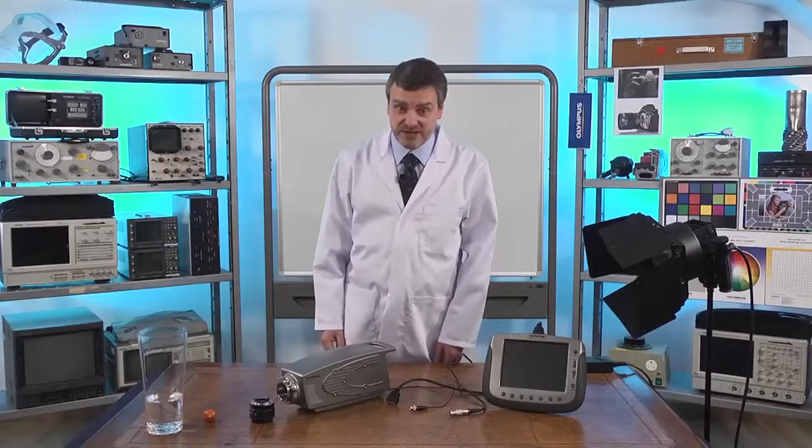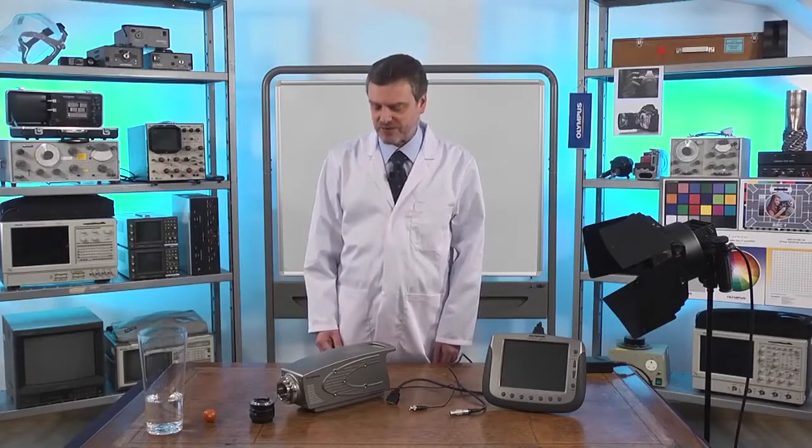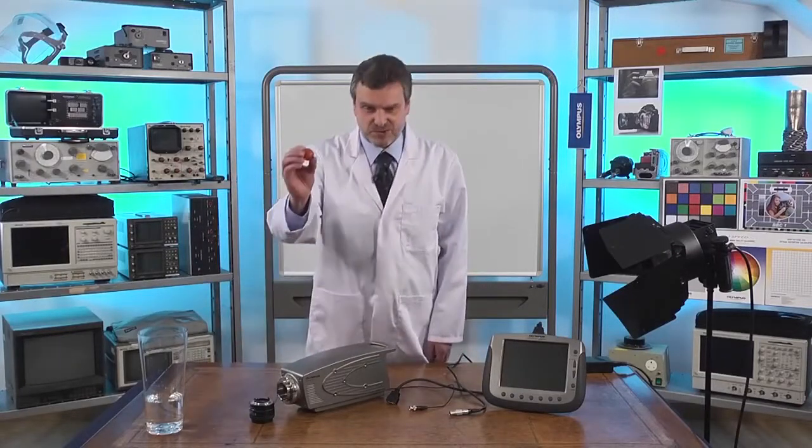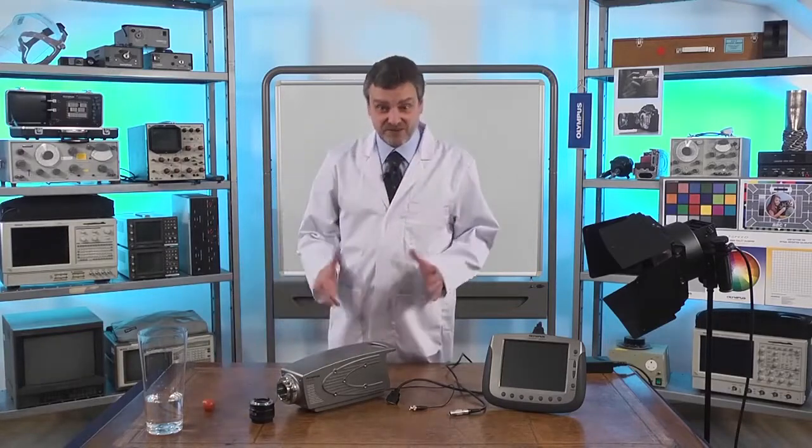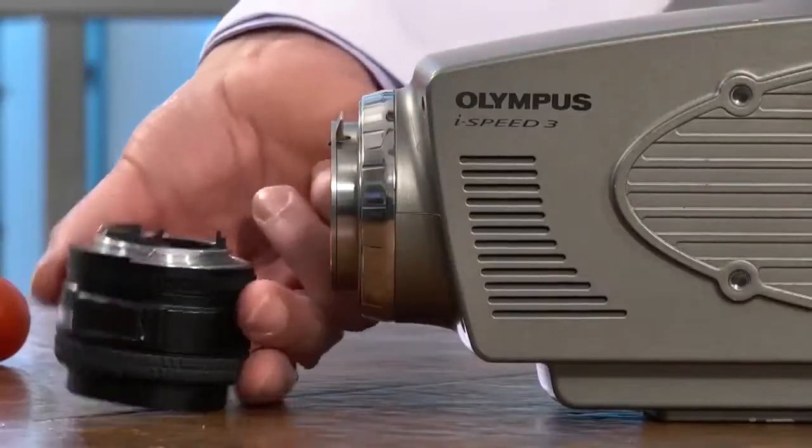I'm going to show you how to make a recording using the iSpeed 3 camera. I'm going to do that by dropping a tomato into a glass of water. First thing I have to do is connect the lens.